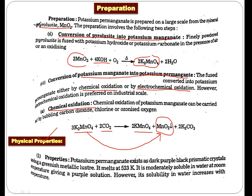Now if you talk about the physical properties, potassium permanganate is a dark purple compound, prismatic crystals. Its melting point is very high, 523K. It's moderately soluble in water, but if you increase the temperature, the solubility increases.